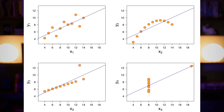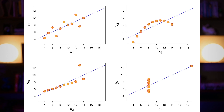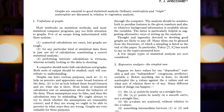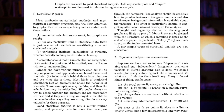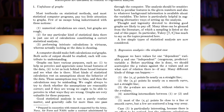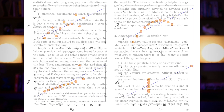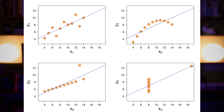This is actually a very famous dataset. It's called Anscombe's Quartet, named after a paper published by Francis Anscombe in 1973. Anscombe created this dataset specifically to show the potential pitfalls of summary statistics like the mean and the standard deviation, and he argued for the use of statistical graphics to analyze the data.